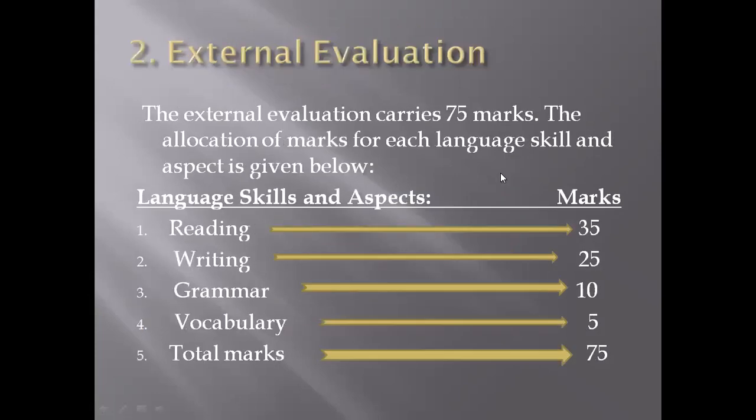For external evaluation, 75 marks are allocated. The breakdown by language skill is: Reading — 35 marks, Writing — 25 marks, Grammar — 10 marks, and Vocabulary — 5 marks, giving a total of 75 marks for the external evaluation.